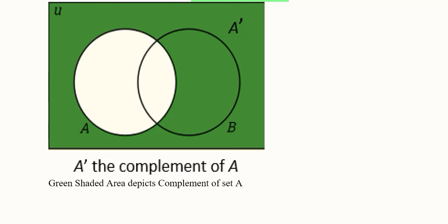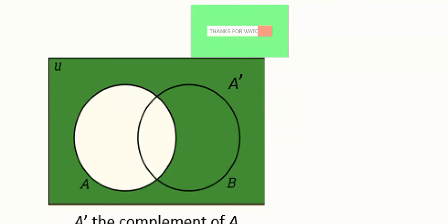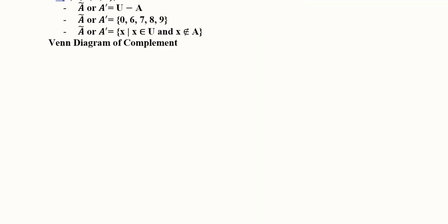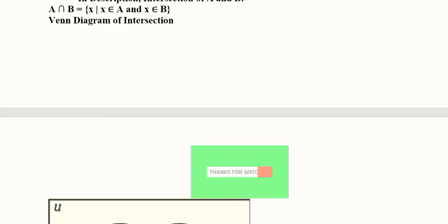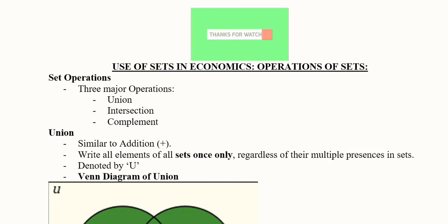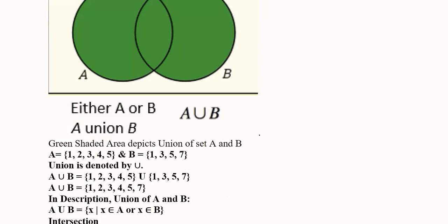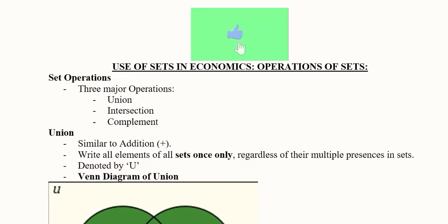So, in this way we can find out the complement of A and this was about complement and before it we did the intersection, the Venn diagram, the numerical and then we can see that we did talk about the union of the sets as well with the help of diagram as well as a numerical. So, in this way we have understood the various operations that are done when it comes to sets. In subsequent parts, we will see that how these things can be done in economics as well. Thank you.